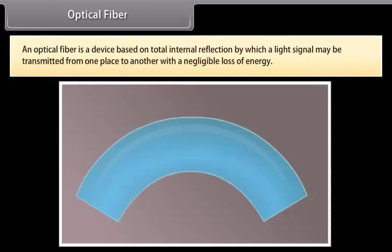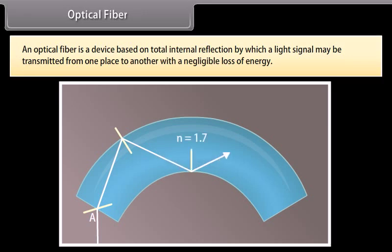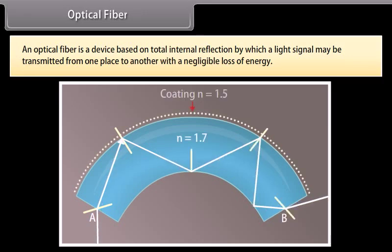Optical fiber: An optical fiber is a device based on total internal reflection by which a light signal may be transmitted from one place to another with a negligible loss of energy.